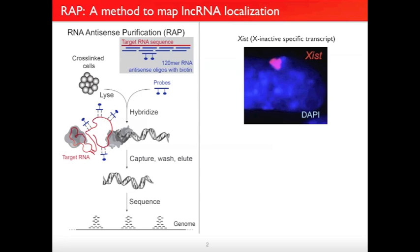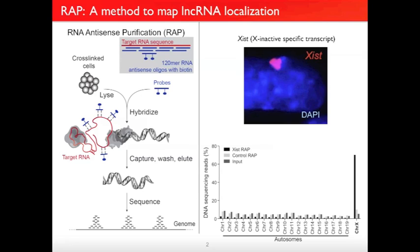We decided to test it on a classical lncRNA called XIST, which has been studied for 20 years because it orchestrates X chromosome inactivation in females. XIST is encoded on the X chromosome, coats one of the X chromosomes, and silences gene expression across the entire chromosome to form a repressive nuclear compartment marked by FISH. We designed probes tiling across the entire XIST sequence, captured the complex, and sequenced the associated DNA. We find that 70% of the reads map back to the X chromosome, compared to just 5% in the input and control.